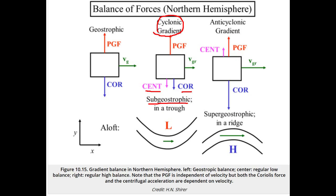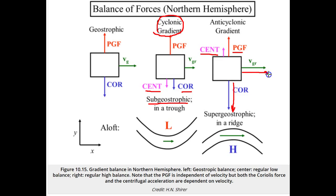For the anti-cyclonic gradient, which is flow around the high, the PGF points away from the high. It is joined by the centrifugal force, which means that the Coriolis force must be stronger than in the geostrophic case because it must balance both the PGF and the centrifugal force. The Coriolis force can only be greater if the velocity is greater. Thus, this velocity is called supergeostrophic because it is greater than the geostrophic velocity.